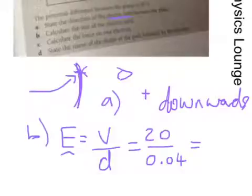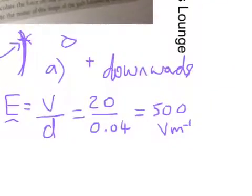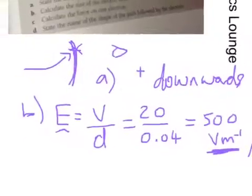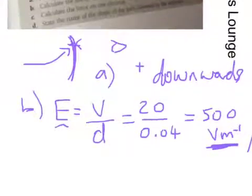So that calculates itself out to be 500 volts per meter. And you could use that notation, or you could use volts over meters as a notation, either would be acceptable. This is what most people use these days though. Part C: Calculate the force on a single electron. If we're looking at the force on a single electron, that means we're going to have to make this one go a little bit slower. We're trying to find F.